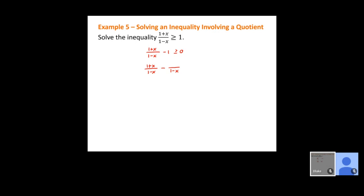You'd have to multiply top and bottom by (1−x). We can think of this as 1/1, so the numerator becomes 1 times (1−x), which is (1−x), and the denominator becomes (1−x). For the fraction itself it just looks like (1−x)/(1−x). When we distribute the minus sign, that's what happens next, but inside the fraction it's just (1−x) ≥ 0.